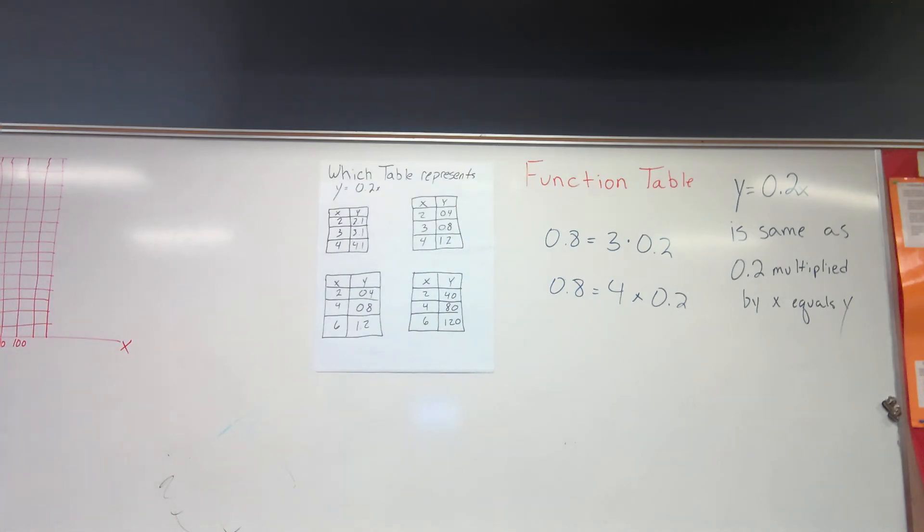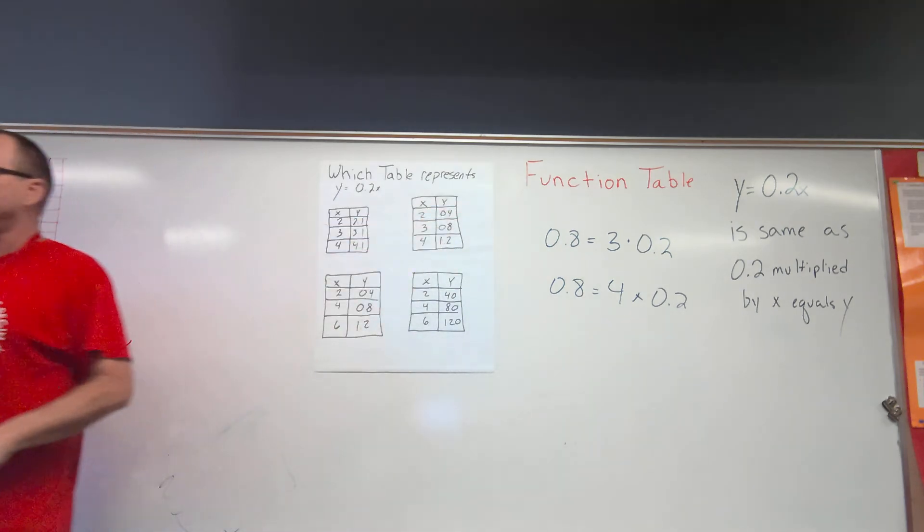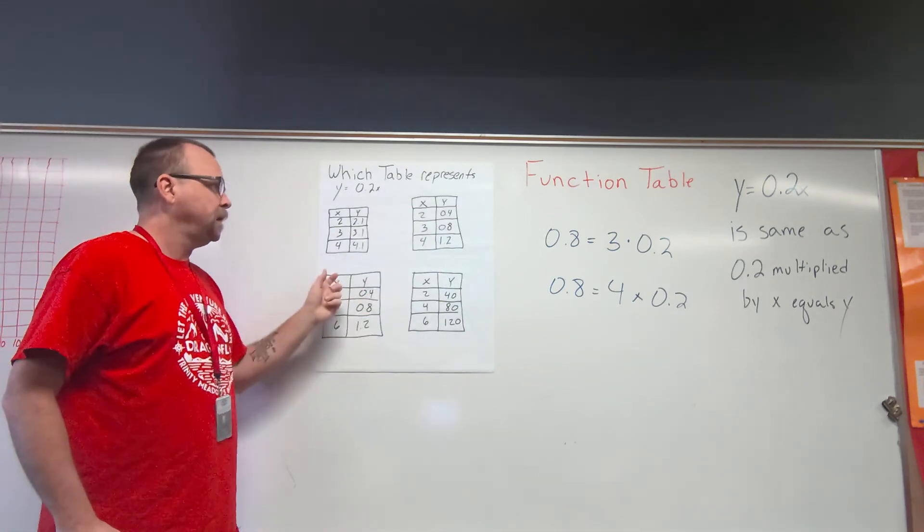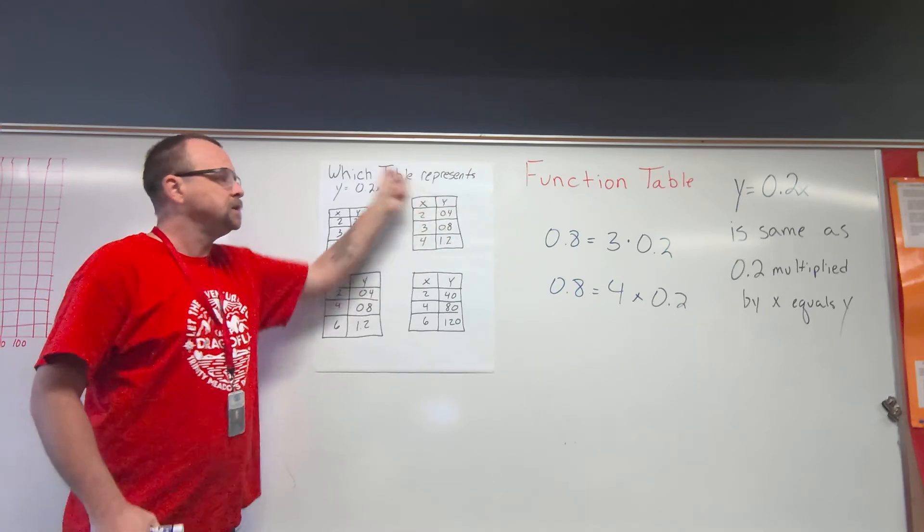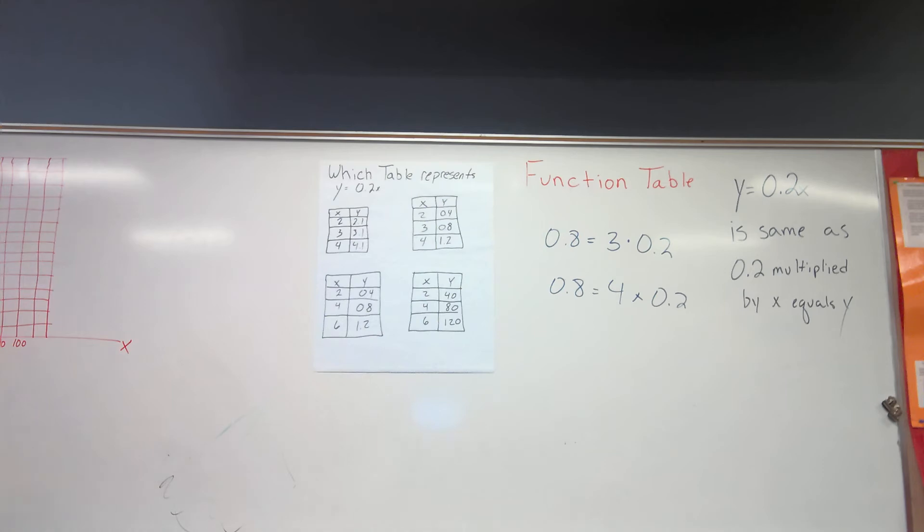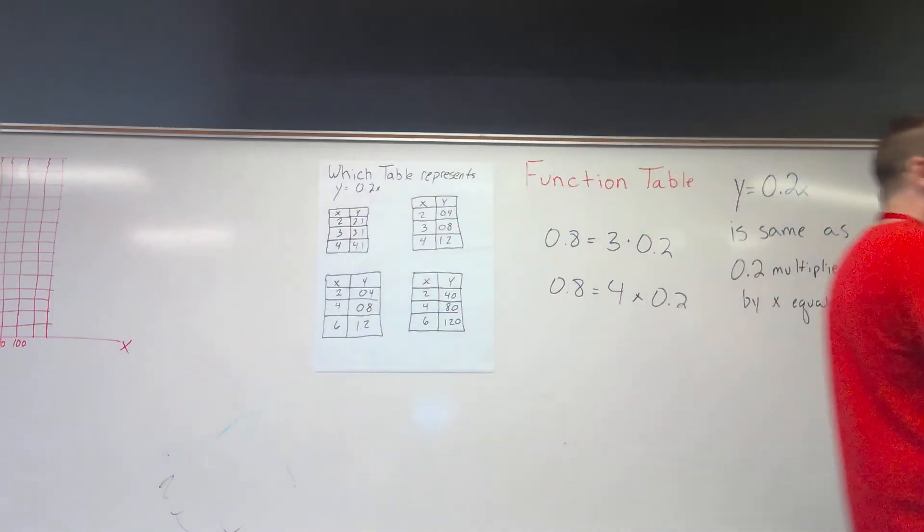Now the tricky thing on this is you notice the first part of the table is correct in both of those. And what tends to happen when you miss one is you go, 'Oh, two times two tenths is four tenths, this must be the answer,' and you just pick one of those without checking the rest of them. This is an easy one because it could have been done in your head, but some of them you'd need to actually work them out a little bit and put forth a little bit of effort.